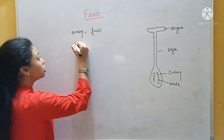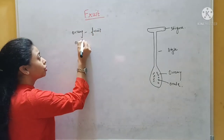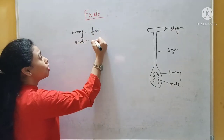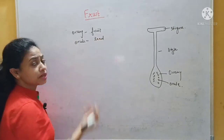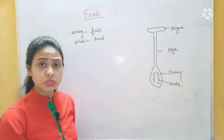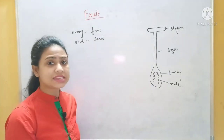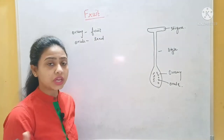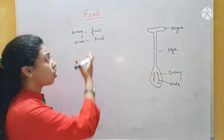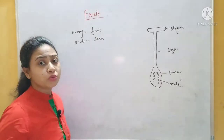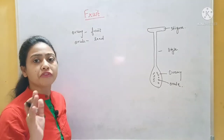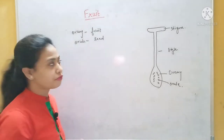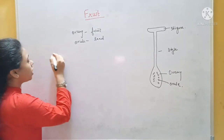And what is the ovule? It is ultimately called a seed. When we eat fruit, we get the seed. So this is what fruit and seed are. Now there are various types of fruit.